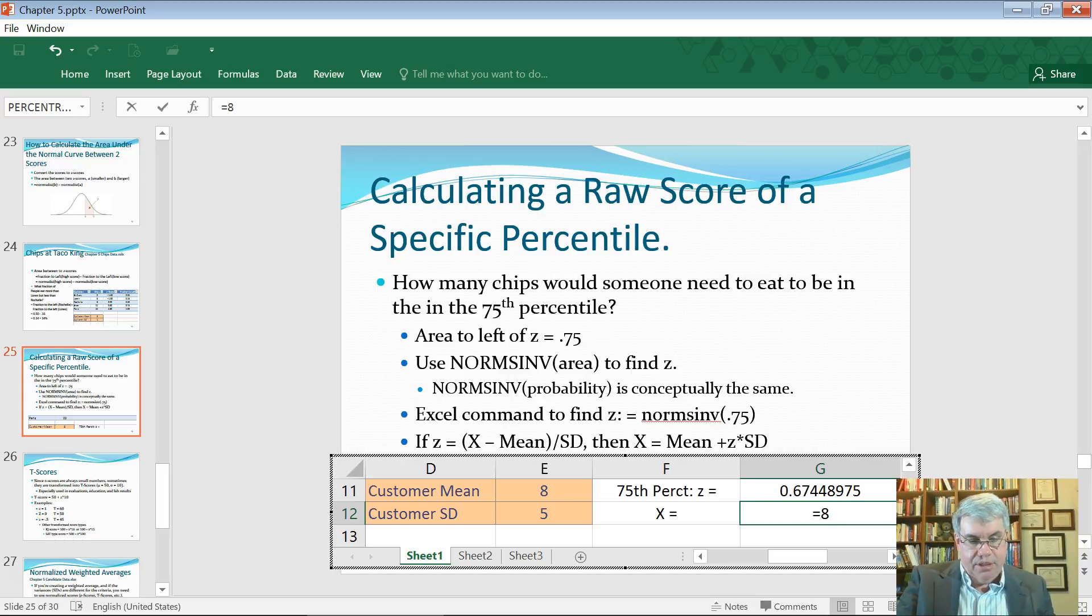And then we're going to do plus z - so I'm going to put in g11 - and I'm going to times that by the standard deviation. I could put e12, but I'm just going to put five there. So that's the equation: the x-score equals the mean plus the z-score times the standard deviation. I press enter.